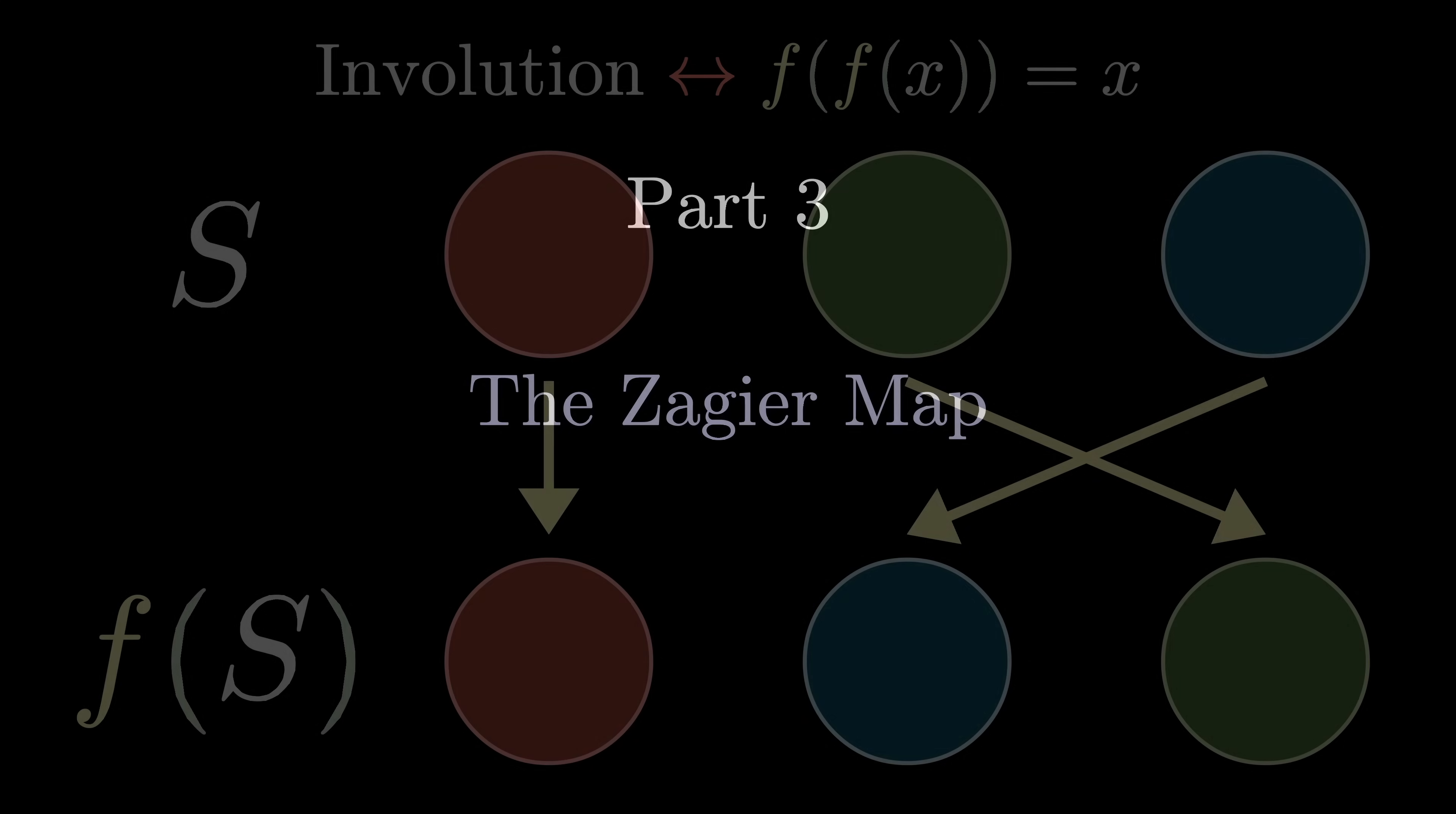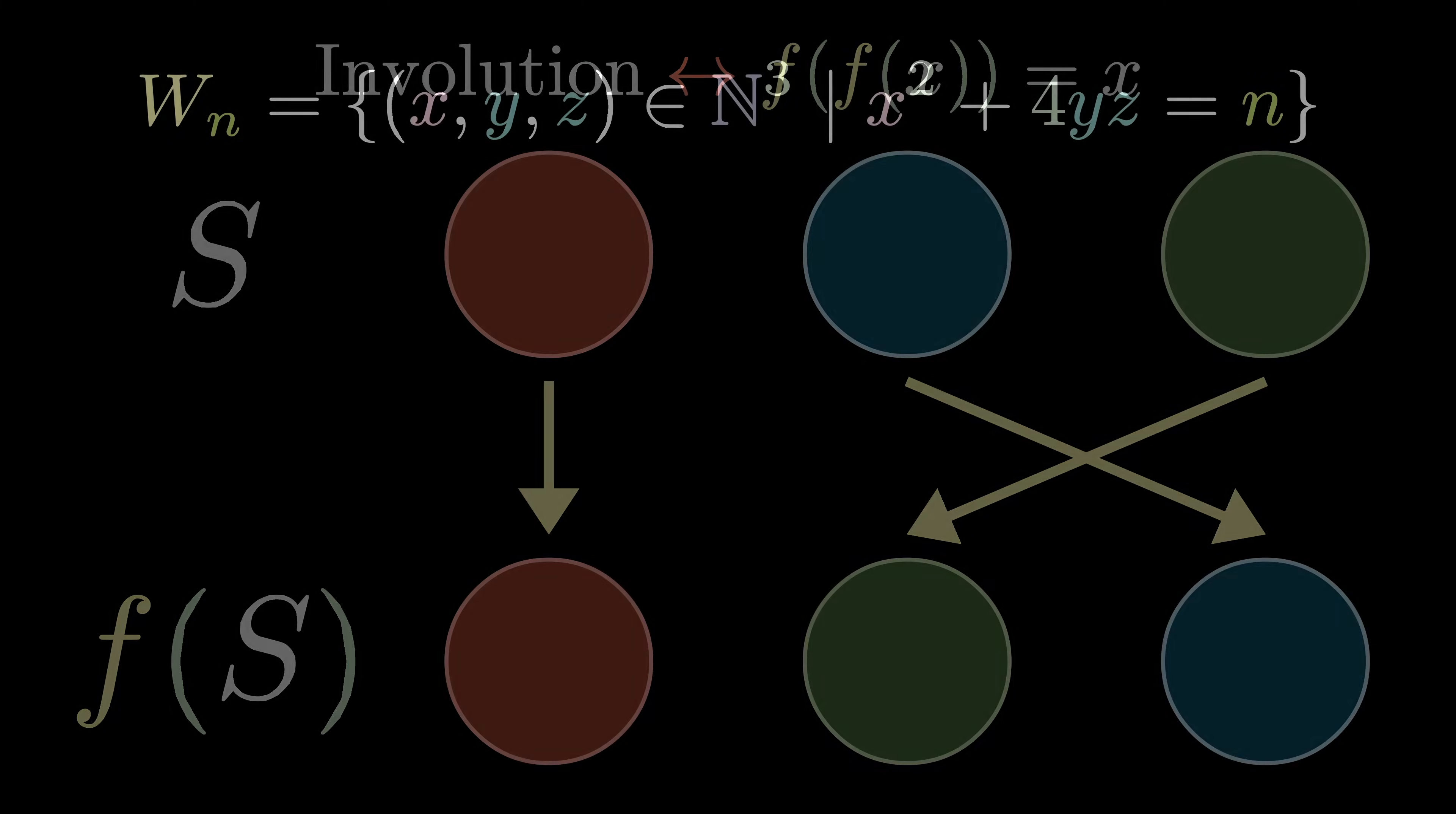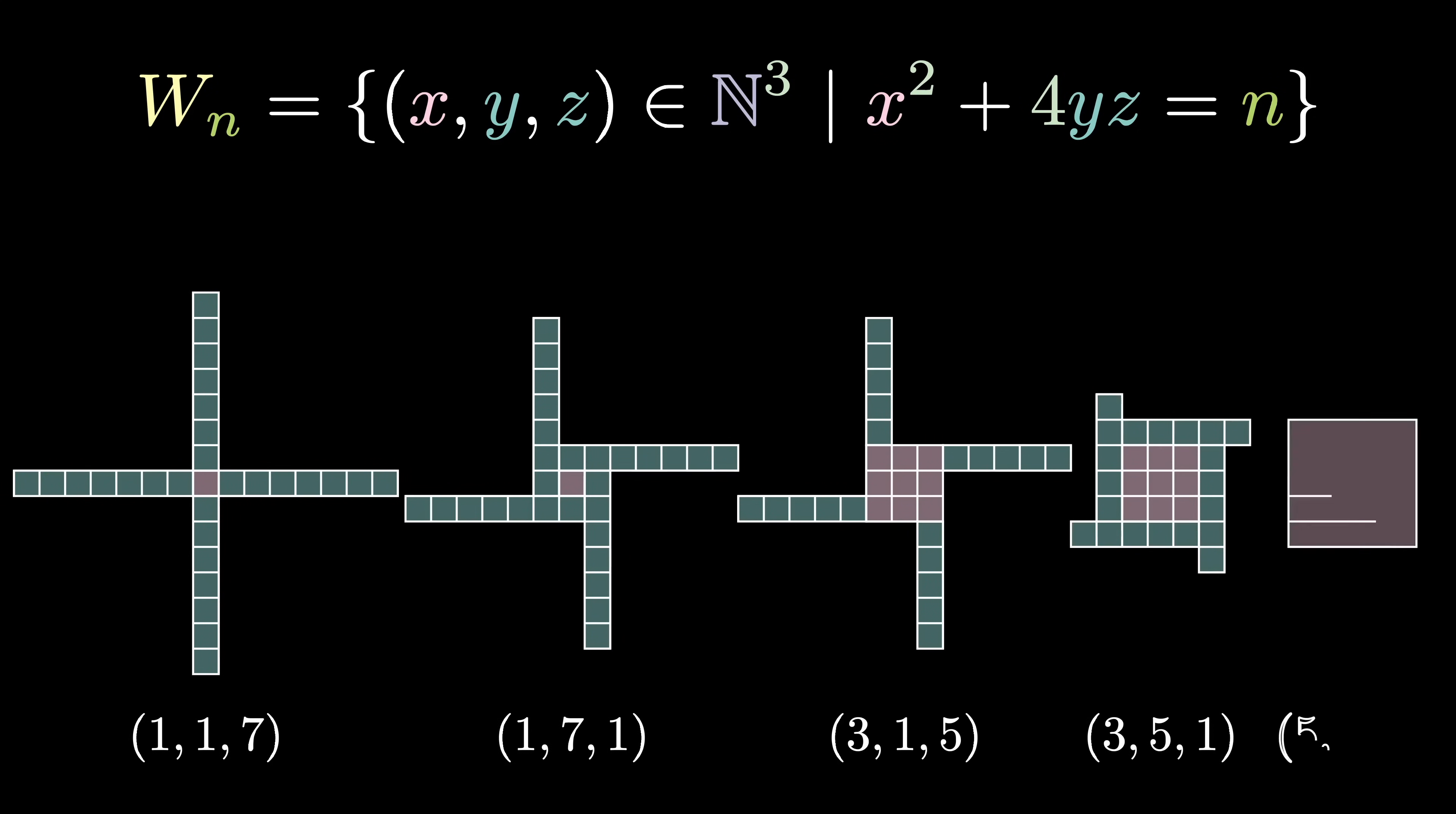So far I've introduced two distant concepts: first the idea of an involution, which is a function that's its own inverse, then the idea of a windmill for a number n, which was defined by a triple (x,y,z) such that x² + 4yz = n. Now let's look at these two in action.